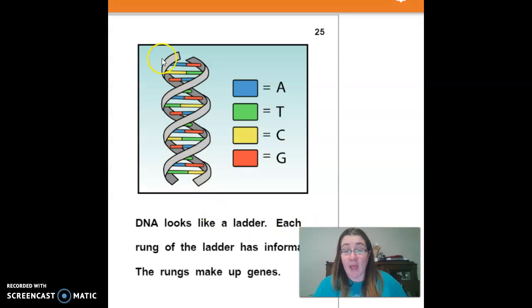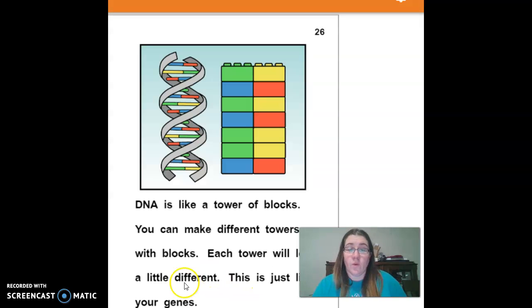DNA looks like a ladder. Each rung of the ladder has information. The rungs make up the genes. So DNA is like a tower of blocks. You can make different towers with blocks. Each tower will look a little different. This is just like genes.